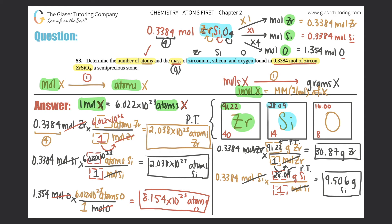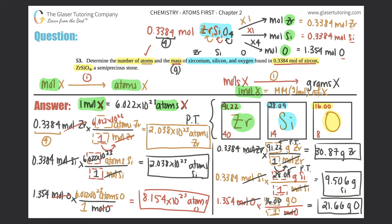And one more time for oxygen: we use oxygen's moles, which was 1.354 moles of oxygen times the ratio. Moles of oxygen on the bottom, grams of oxygen on top. One mole of oxygen equals its molar mass, 16.00. Cancel out moles of oxygen. 1.354 times 16.00 equals 21.66 grams of oxygen (four sig figs). Those are the three mass answers.